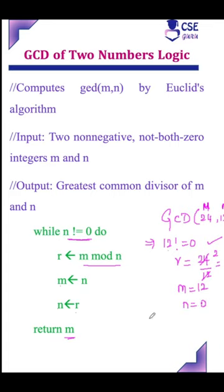Next iteration it will check: n value not equal to 0. The condition fails. It will exit the loop and print m value as the result, 12 now. So GCD of 24 comma 12 is 12.